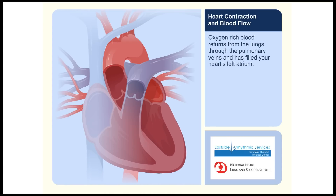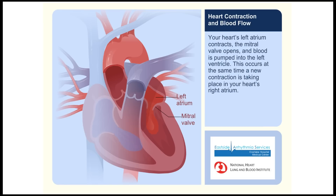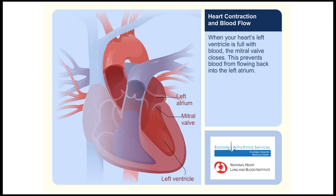Oxygen-rich blood returns from the lungs through the pulmonary veins and fills your heart's left atrium. Your heart's left atrium contracts, the mitral valve opens, and blood is pumped into the left ventricle. This occurs at the same time a new contraction is taking place in your heart's right atrium.